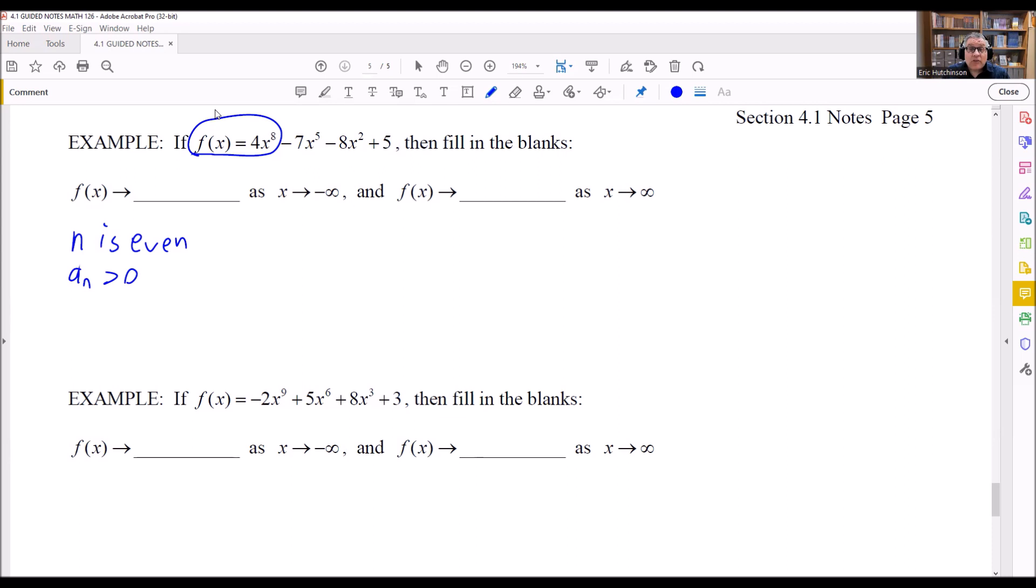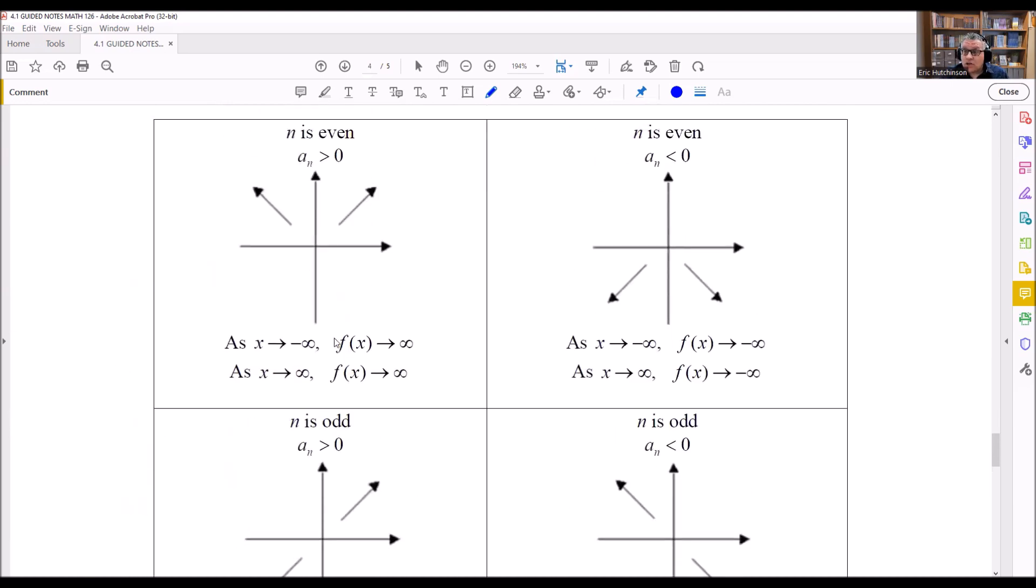All we have to do is look at the end behavior model on the table, and that's going to tell us what to fill in on these blanks. We'll scroll up here. So right here, that's the situation we have: n is even and a_n > 0.